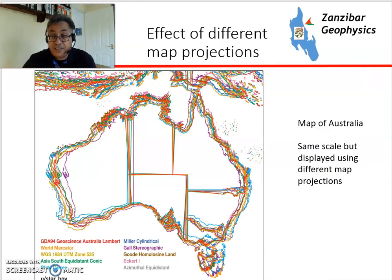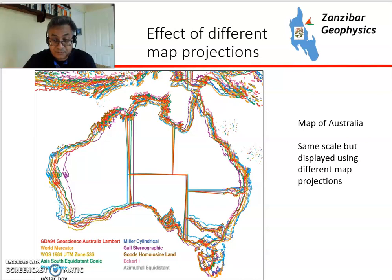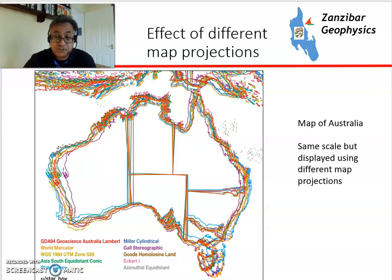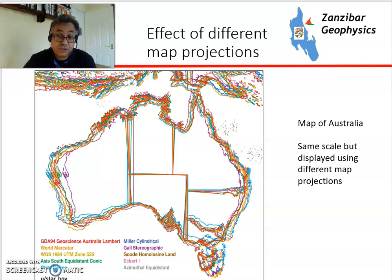Here's an example of different projections for a map of Australia. They're all listed and colour-coded, covering everything from World Mercator to WGS84 for the particular UTM zone. The key point is that projections give you different shapes and different locations, so it's a good idea to stick to one. Most geological systems will only allow you to use one, but you need to make sure that data comes into it in the right way.